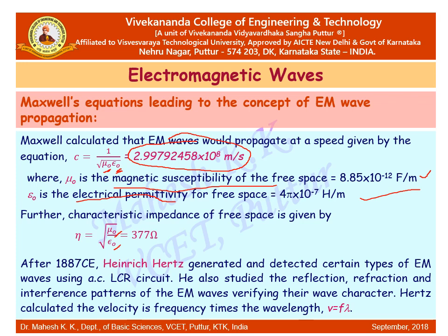German physicist Heinrich Hertz generated and detected electromagnetic waves in the laboratory around 1887 using an AC-LCR circuit. He also studied the reflections, refractions, and interference patterns of electromagnetic waves, verifying their wave characteristics. The velocity is given by the relation V equals frequency times wavelength, that is V = f × λ, where V is the velocity, f is the frequency, and λ is the wavelength.